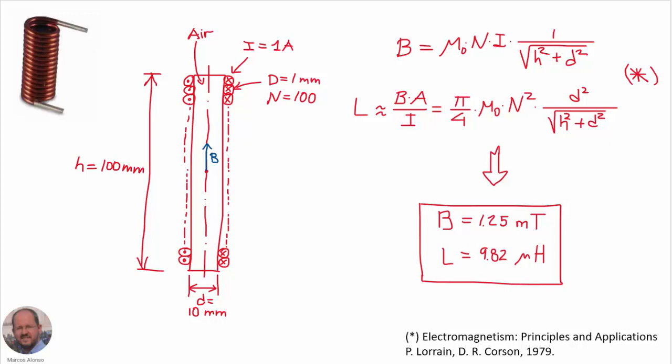The problem we are going to study corresponds to an air core inductor. The inductor has a length of 100 mm and a diameter of 10 mm. The diameter of the wire is 1 mm, the number of turns is 100, and we are going to inject a current of 1 ampere into the coil.